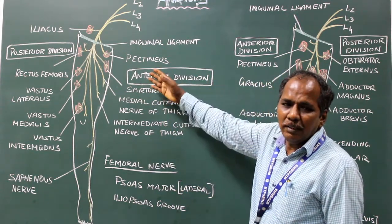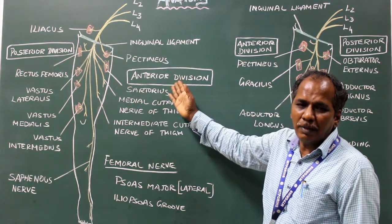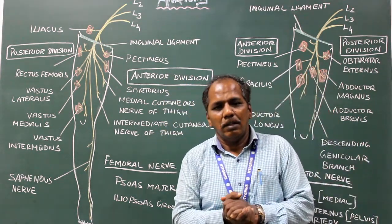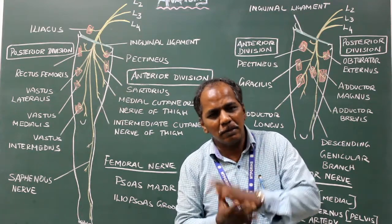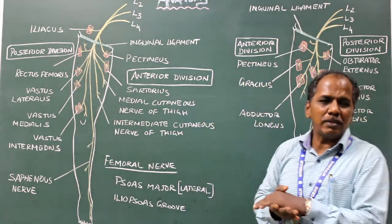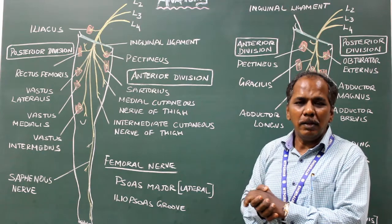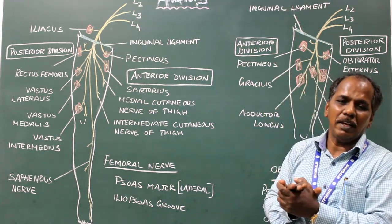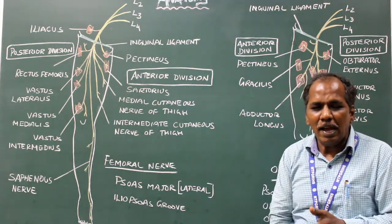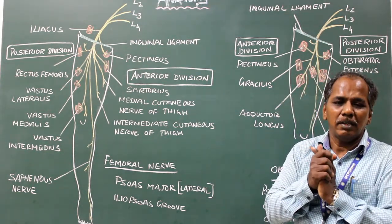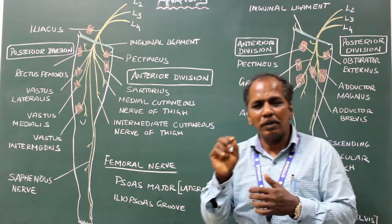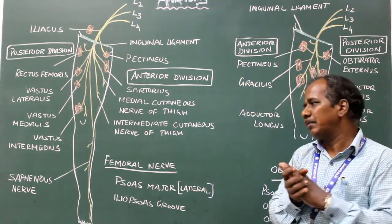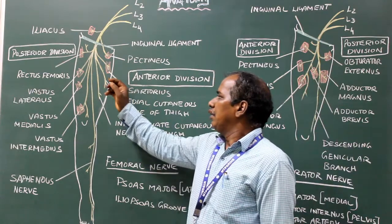The anterior division has one muscular branch and two cutaneous branches. It gives a muscular branch to rectus femoris. The two cutaneous branches are the medial cutaneous nerve of the thigh and the intermediate cutaneous nerve of the thigh, which supply the anterior and medial part of the thigh.